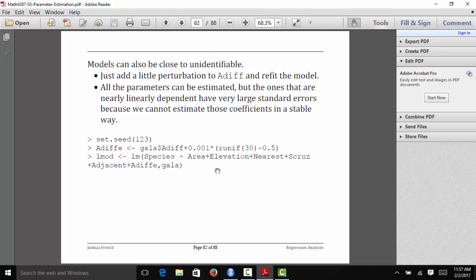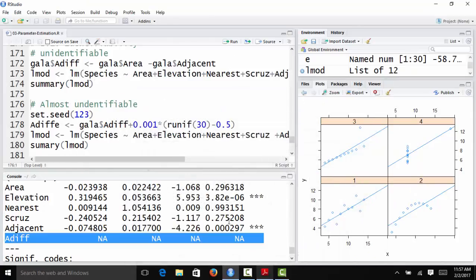You can also have a problem where a model is close to unidentifiable. Let's say that instead of having adif being an exact linear combination of two of the other columns of our X matrix, we're going to say it's the difference of those two variables plus a little bit of error. We're going to generate adif E, which was adif, and we're just going to add a little bit of random error to each observation. Then we'll refit the model with all the previous regressors as well as adif E. Let's see what happens when we do that.